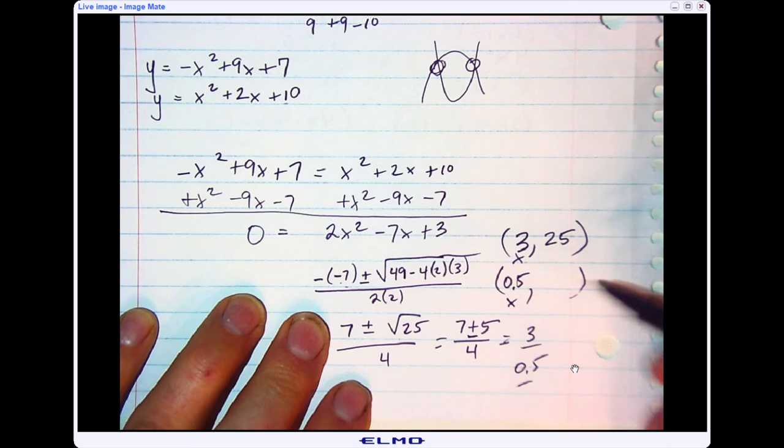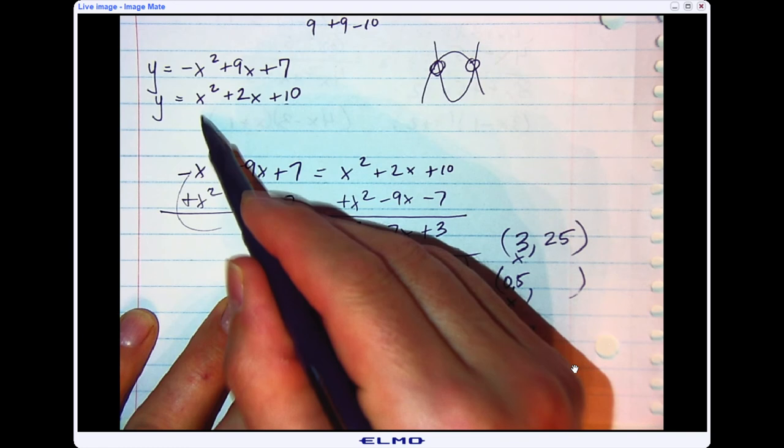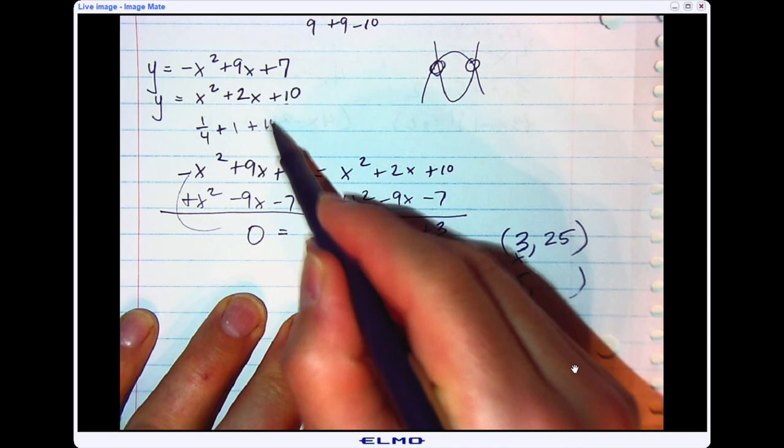For the last one, I'm going to put in half for x. Half squared is 1 fourth. Half times 2 is 1. So 1 quarter plus 1 plus 10 would be 11 and a quarter, or 11.25.